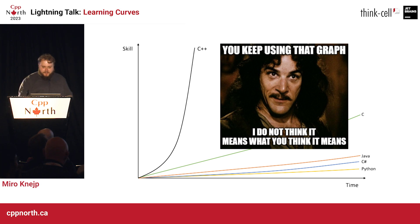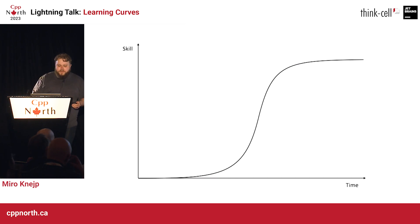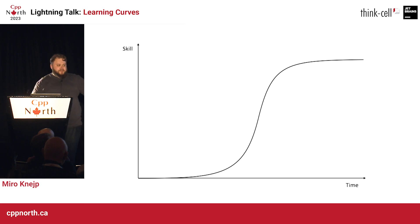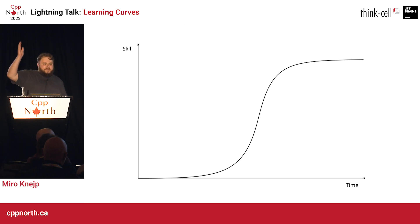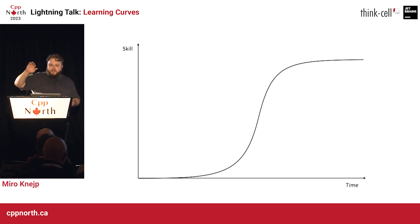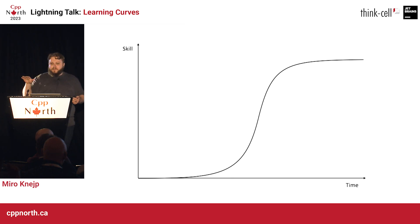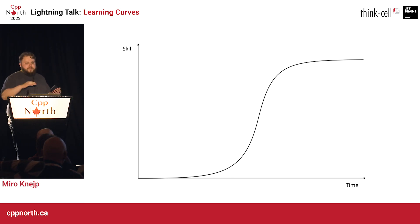Because an actual learning curve is probably more like this: you have a slow start. You're getting introduced to all the new things and you don't have any intuition yet. Eventually you get there, and then you have this rapid rise in skill — you're getting fast and productive. And then eventually you plateau as you become more experienced, becoming an expert, with only a few things left to master.